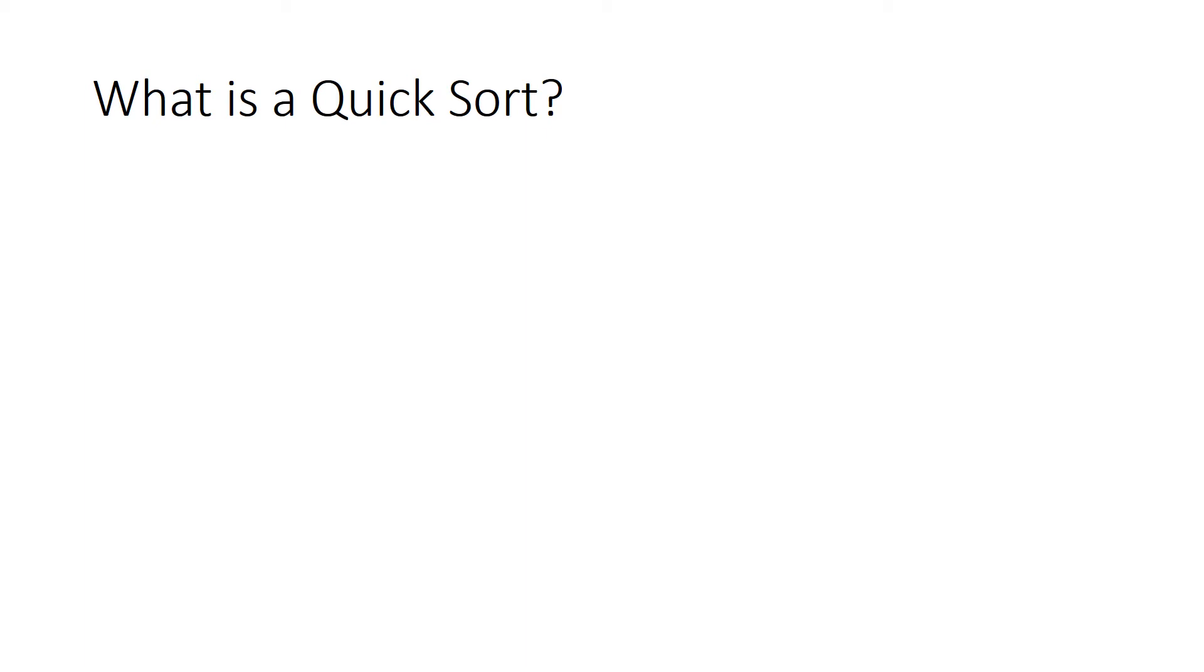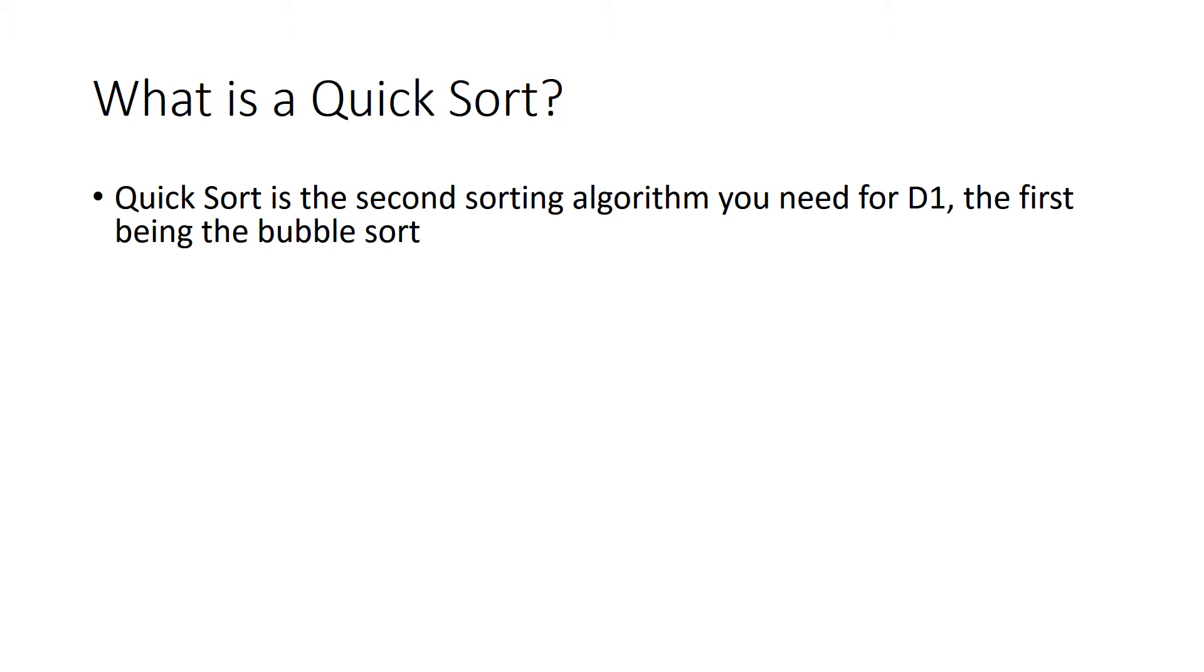So what is the quicksort algorithm? The quicksort is the second algorithm that you'll need for D1, the first being the bubble sort. Now they both do the same thing, they sort the list, but how they do it is very different.